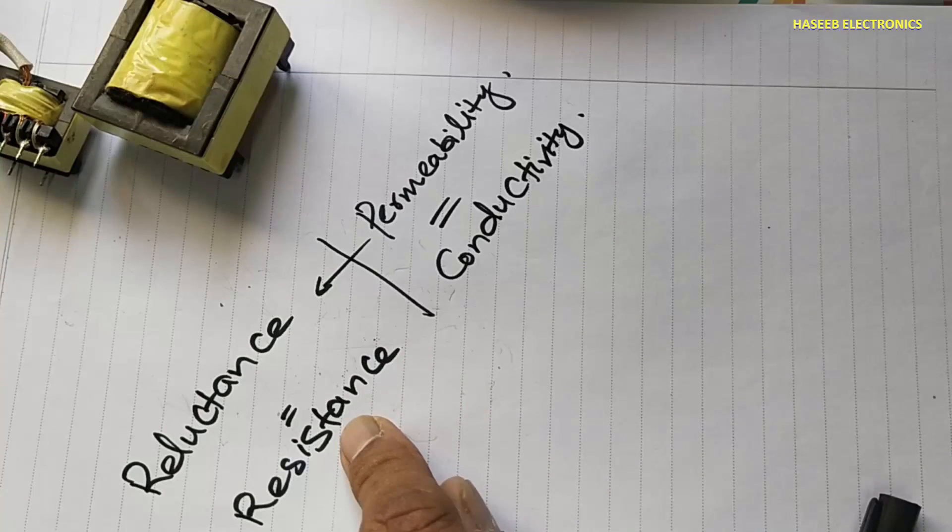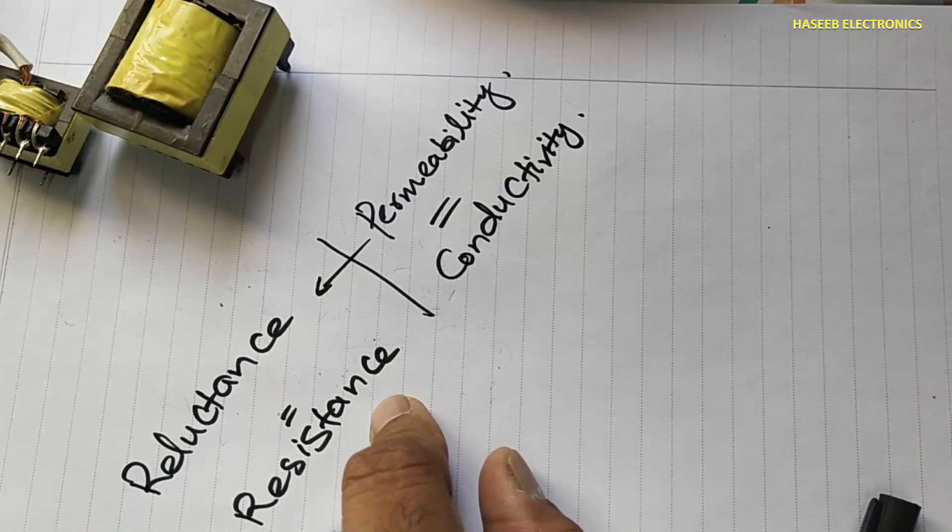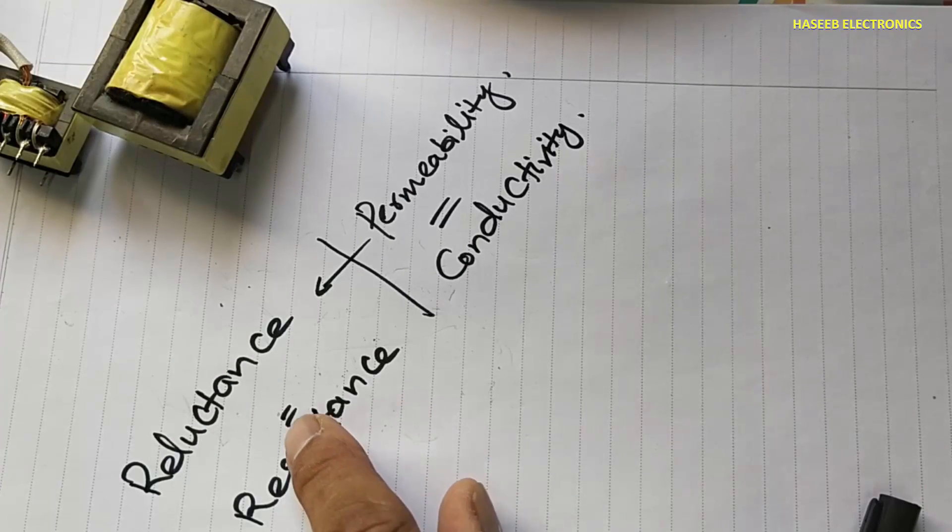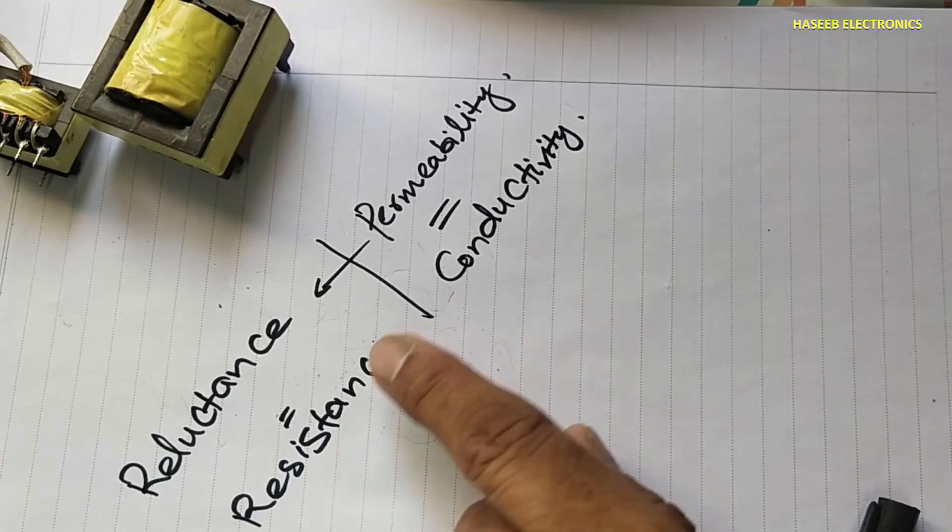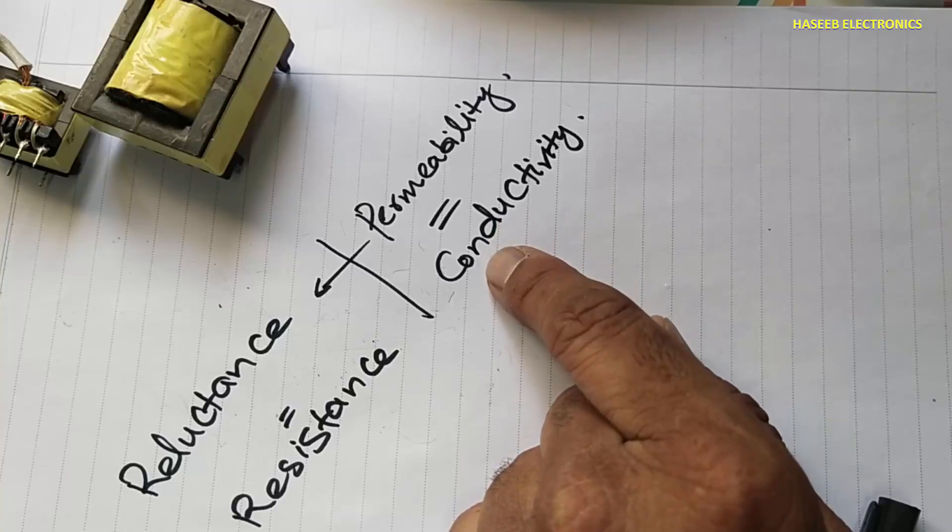Resistance, as we know, is a specification of material. How much it will oppose the flow of electronic current, that is called resistance. Resistivity. Opposite to resistivity is conductivity. That means how easily it will allow the current to flow. Similar here.